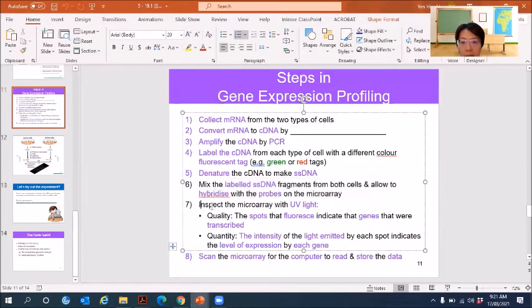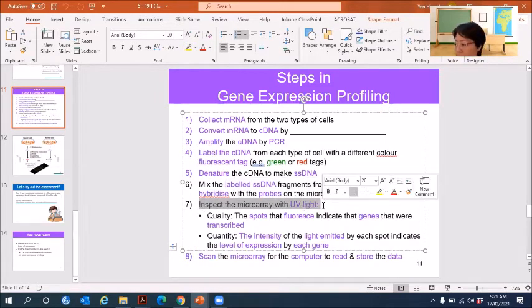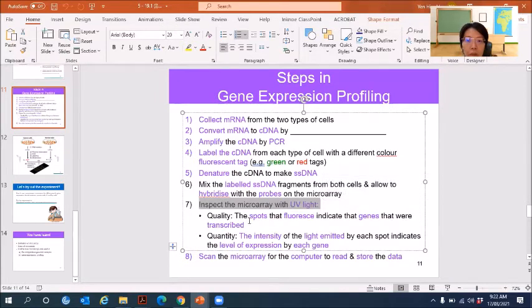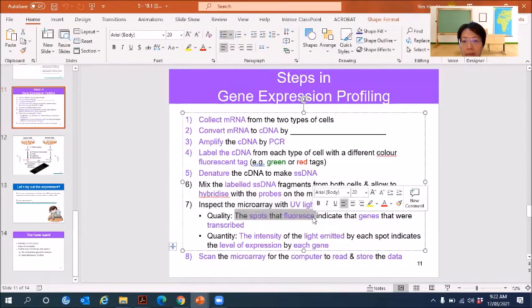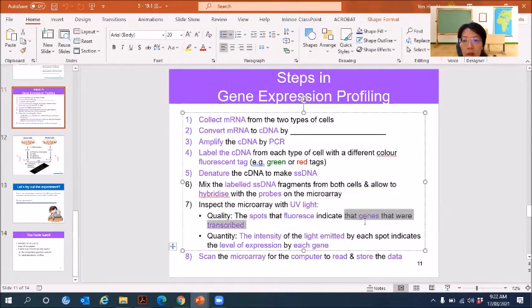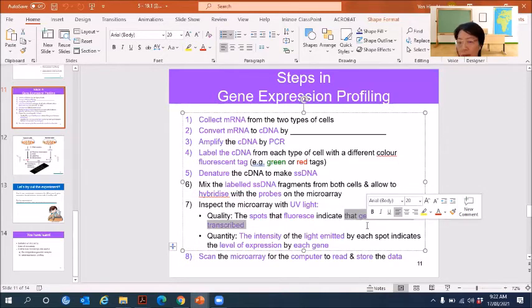And then inspect the microarray with UV light. So when you have the UV light, the spots that fluoresce indicates that the genes that were transcribed. That means the genes are present. The genes have been expressed. So seeing a fluorescence spot tells you that the gene has been expressed. That's why the mRNA is present.